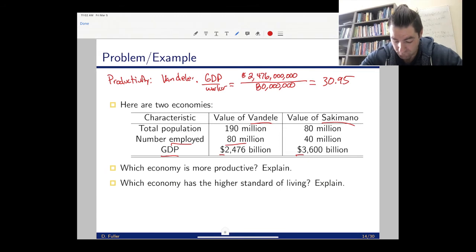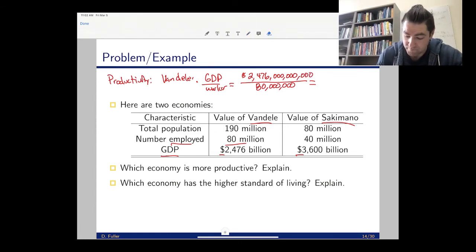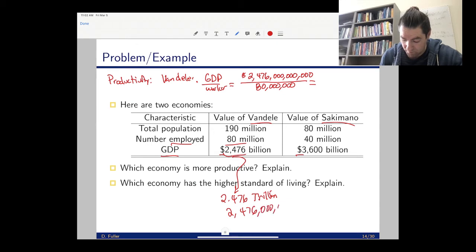I get 30.95. Oh, it's 2,476 billion, which actually has three more zeros there. I didn't see the comma, so that is 2.476 trillion, which is millions, billions, and trillions, so it's actually going to be a factor of 10 more - so 30,950 for Vandelay.